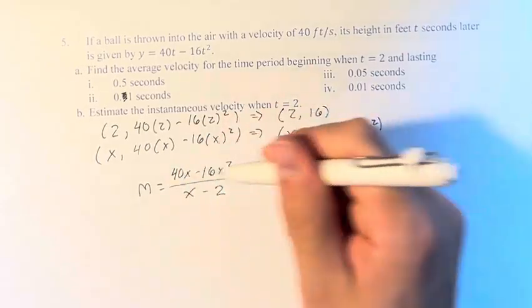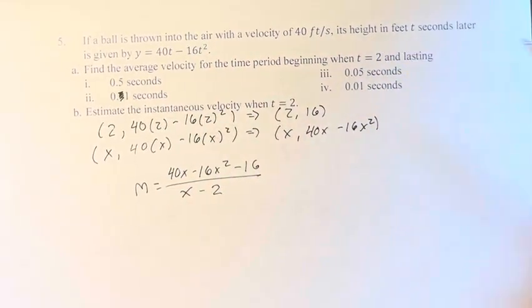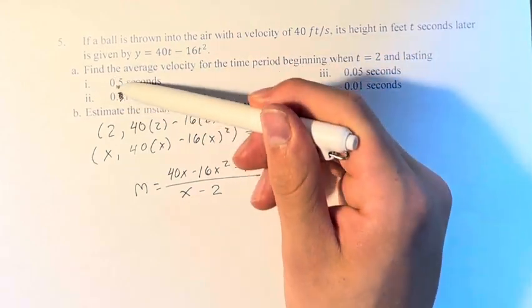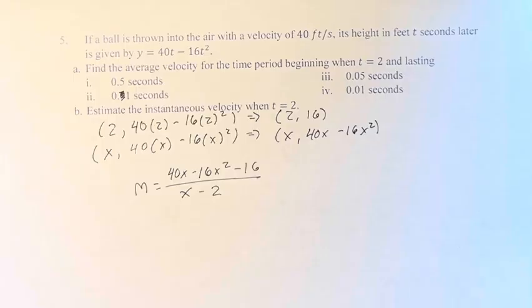And you just have to calculate this for each of these values. Two seconds plus 0.5, two seconds plus 0.1, and so on, which I've done already.